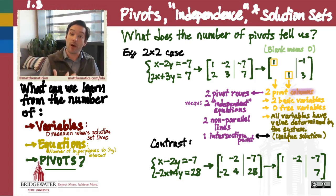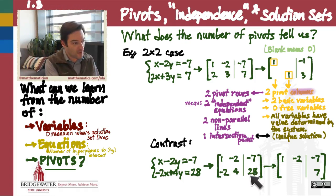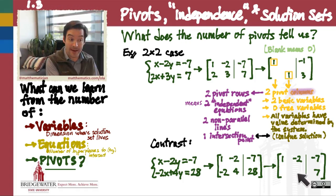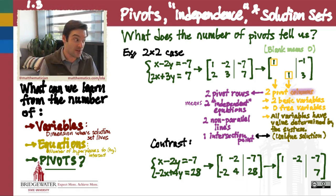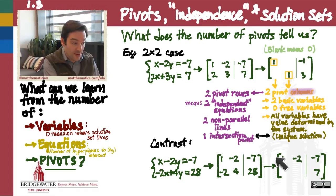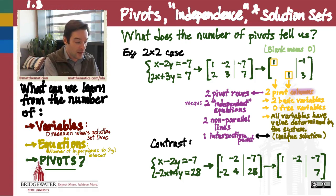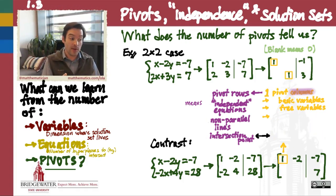First, I would multiply the second row by a half. Then I would add the first row into the second row. But when I do that, both of the first two entries in that row end up zeroing out. I can't zero out the first entry without also simultaneously zeroing out the second entry. So I lose the pivot in the second column — equivalently, the pivot in the second row — that we had in our first example. In my new system I only have one column that has a pivot.